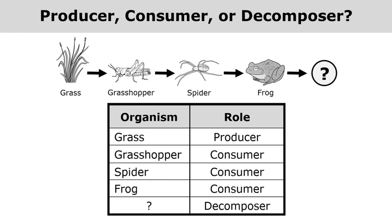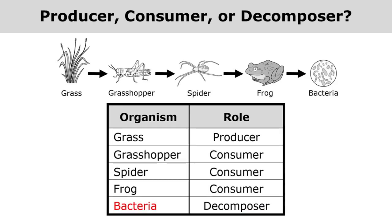But if we did put a decomposer into our food chain, what would it look like? Remember that bacteria and fungi are the decomposers in most ecosystems. So don't assume that the last organism in a food chain is a decomposer — that's not always true. Only when you see an actual decomposer, bacteria or fungi, should you put 'decomposer' as the role of that organism in a table.